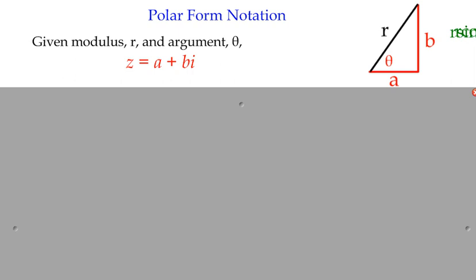Looking at this diagram, we can see the connection between the two. We have a right-angle triangle that effectively represents our axes. If we think of that as our imaginary and real axis, A and B represent the real and imaginary parts of the complex number — the horizontal and vertical Cartesian coordinates. R is the straight-line distance from the origin to the number, the modulus, and theta is the angle.